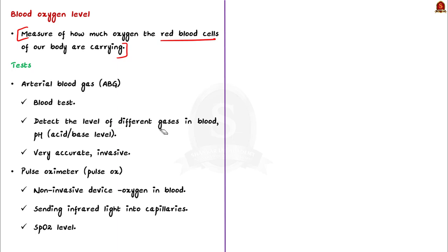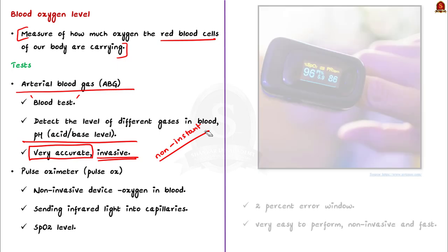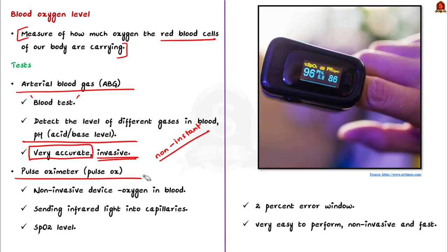Now let us learn about blood oxygen levels. The blood oxygen level is a measure of how much oxygen the red cells of our body are carrying. It can be measured by two tests. The first is arterial blood gas (ABG), a blood test that measures blood oxygen level along with pH levels. The ABG test is very accurate but it is invasive and time consuming, so many doctors do not prefer it.